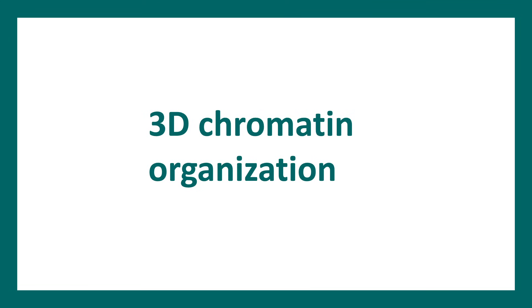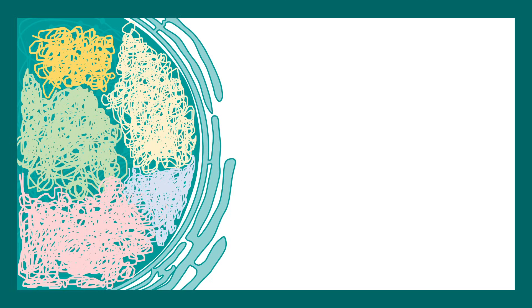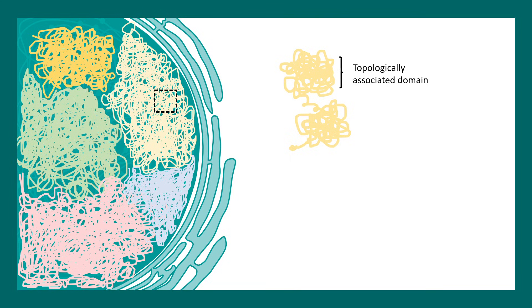Let's talk about the 3D organization of chromatin. We have to understand that chromosomes are not flattened in 2D space — they are organized within the 3D volume inside the nucleus. Inside the nucleus, chromosomes occupy specific domains known as chromosome territories. Zooming into chromosome territories, there are topologically associated domains which come closer in 3D space.